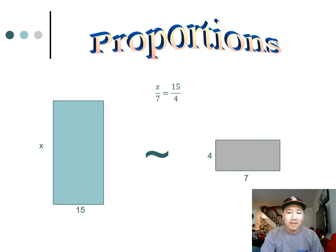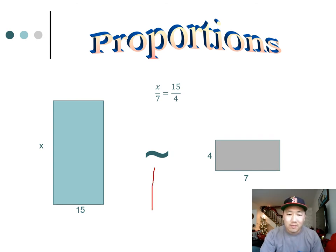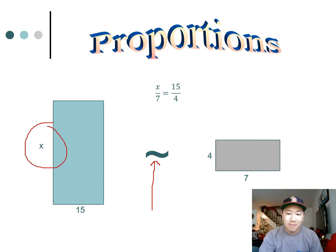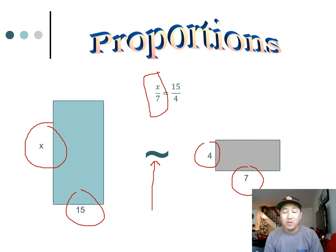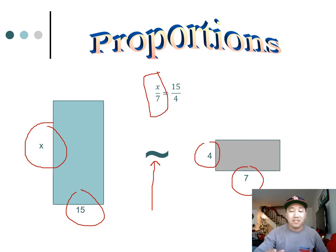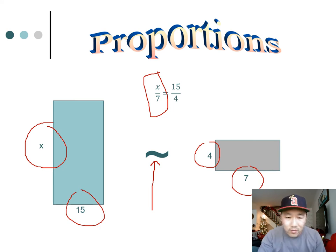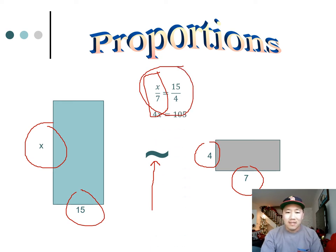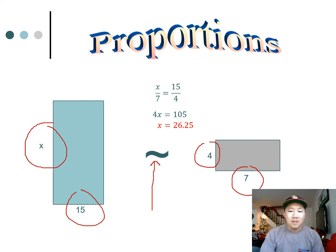Moving on to proportions. These two shapes are given as similar, shown by the symbol. Since they're similar, we can compare the sides: X compares to 7, and 15 compares to 4. When setting up comparisons, stay consistent — if you go large to small, continue that throughout the whole problem. Then cross multiply and simplify to get X equals 26.25.